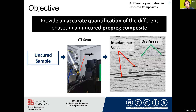Now comes the difficult part in which we have to separate the different phases. Normally we have to use a threshold — we place a threshold in the histogram in order to separate the voids, dry areas, and resin.